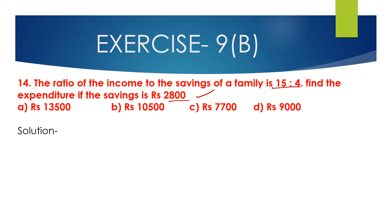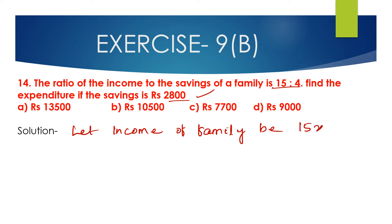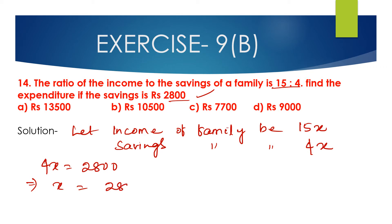The ratio of the income to the savings of a family is 15 is to 4. Let the income of a family be 15x and savings be 4x. It is given that saving is 2800 rupees, so 4x equals 2800 rupees. Therefore x will be 2800 divided by 4, which is equal to 700 rupees.